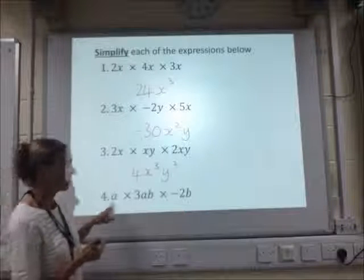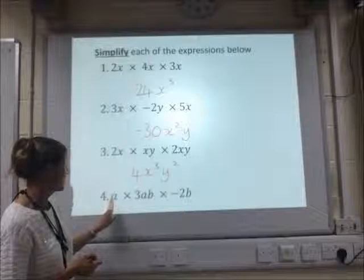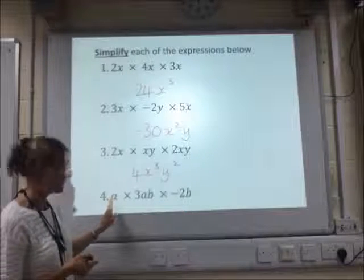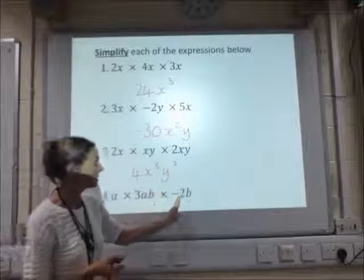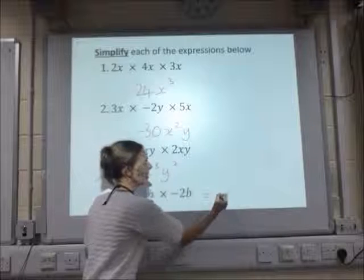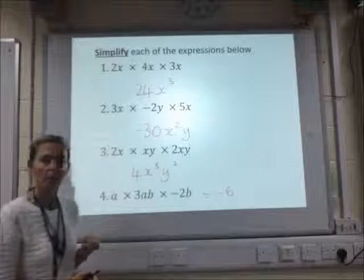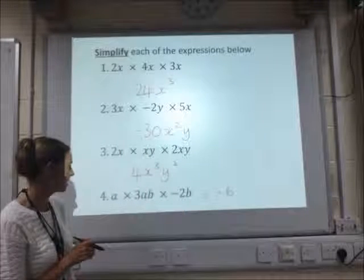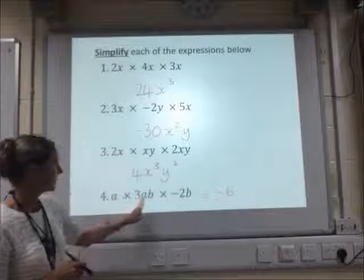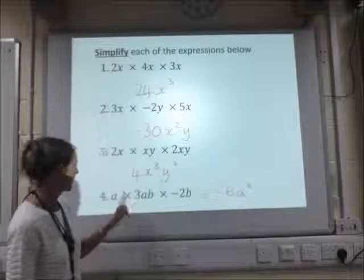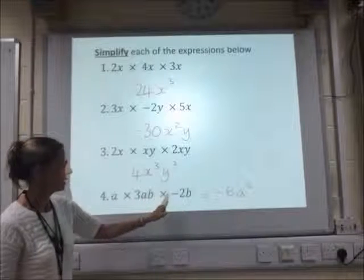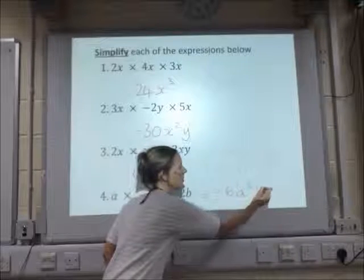Okay, last one, again I'm going to deal with the numbers. There's a number 1 there, which we don't usually write in. So we've got 1 times 3, which is 3, times minus 2, which is minus 6. Positive times a negative is a negative. Then we've got a times a, a squared. Then we've got b times b, which is b squared.